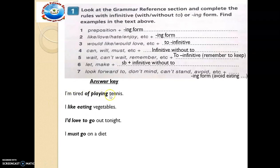For example: I am tired of playing tennis — I like eating vegetables. These use the ING form. I would love to go — this is the to-infinitive. I must go — did you see that? That is the bare infinitive after a modal verb.